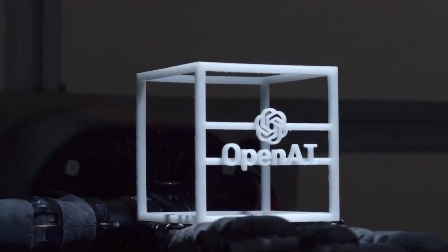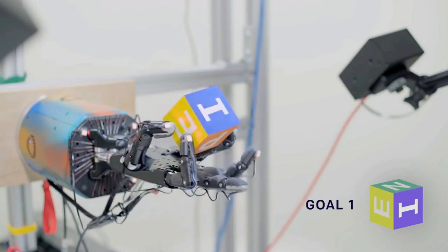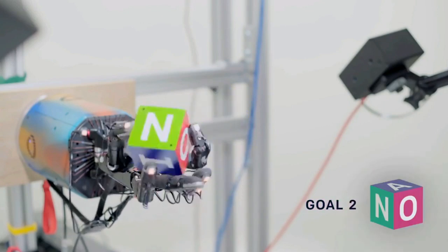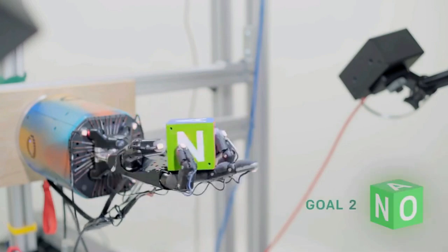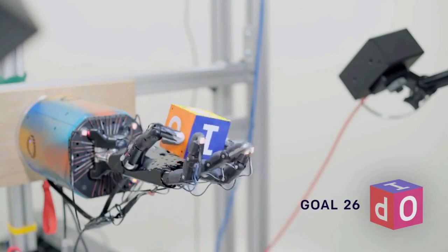OpenAI has trained a human-like robot hand to manipulate physical objects with unprecedented dexterity. Their system, called Dactyl, is trained entirely in simulation and transfers its knowledge to reality, adapting to real-world physics.